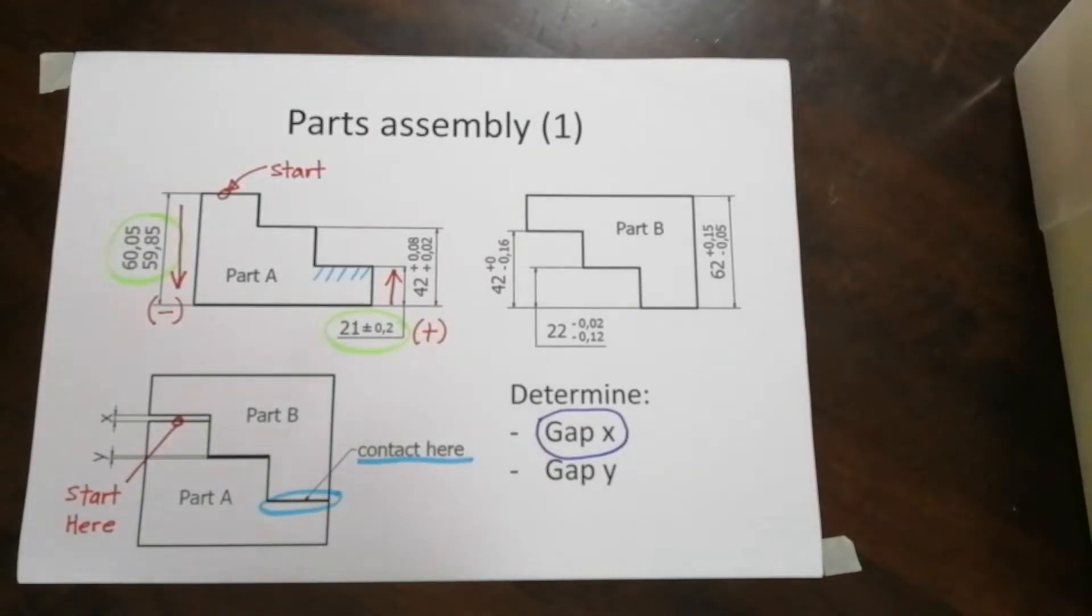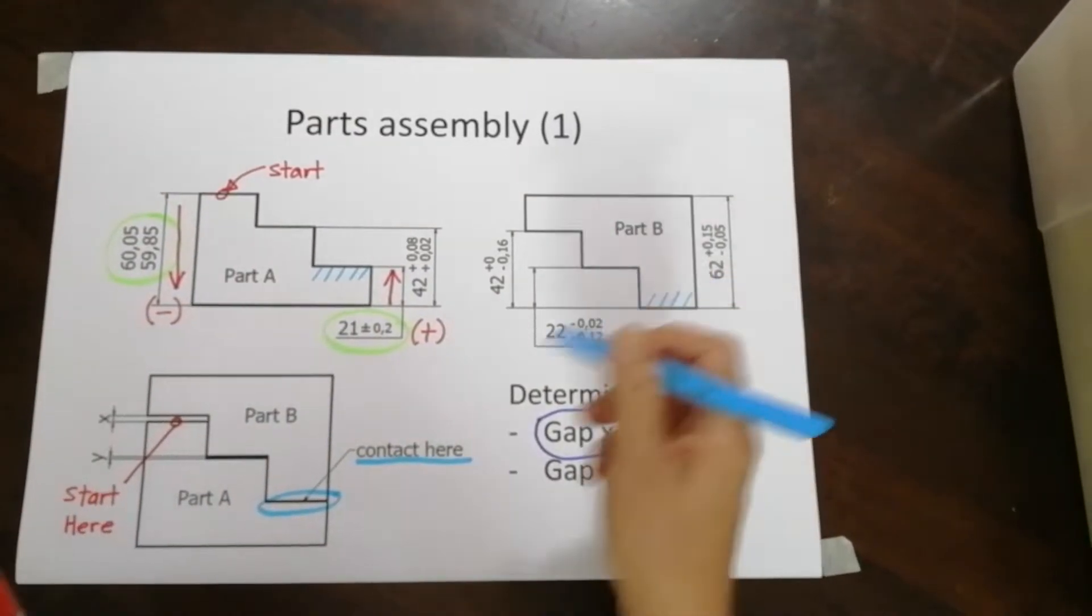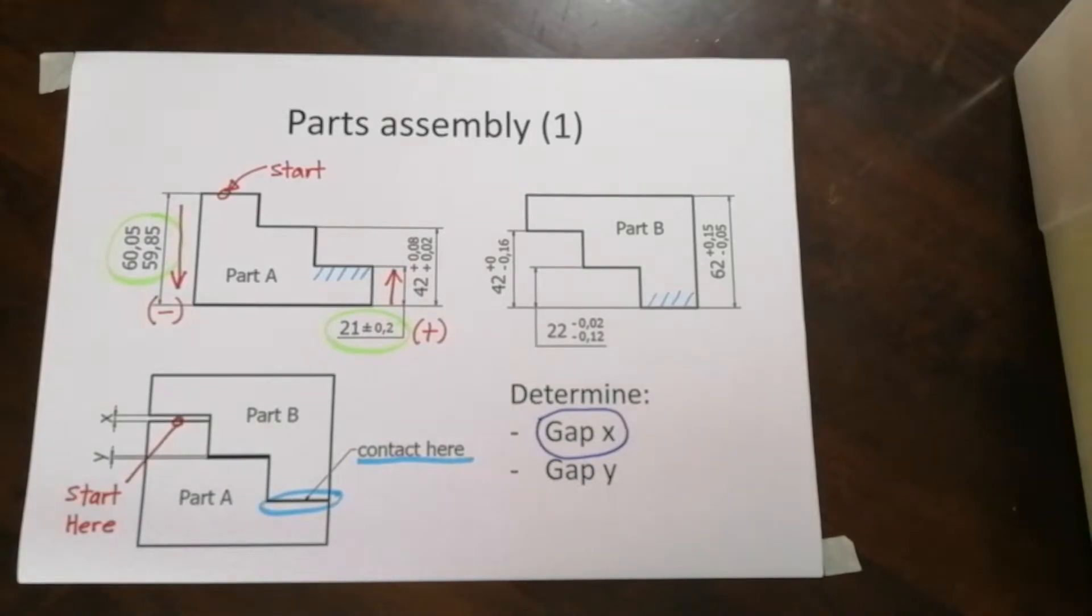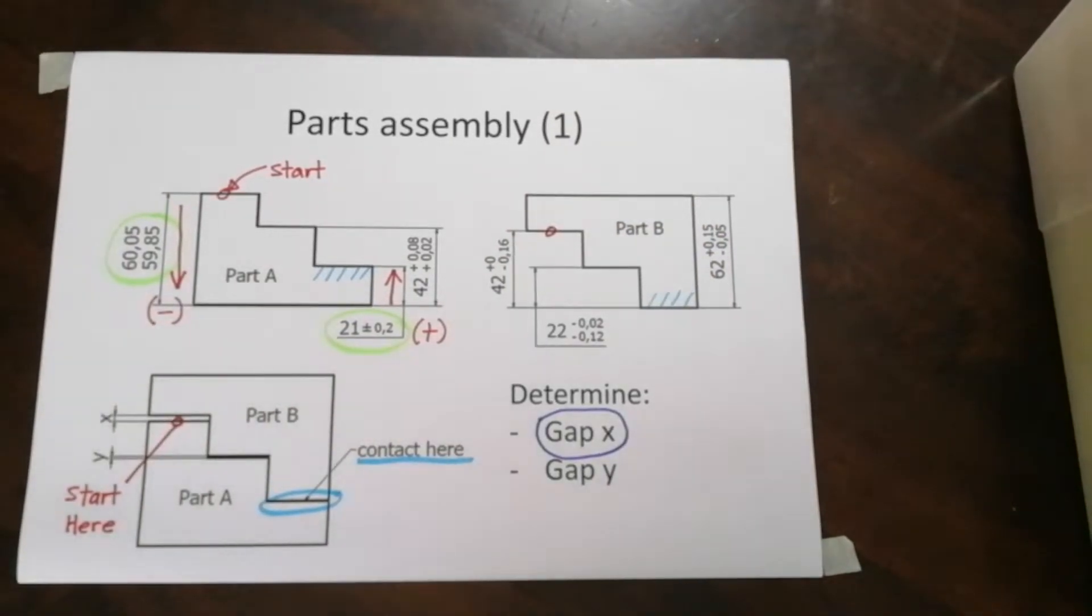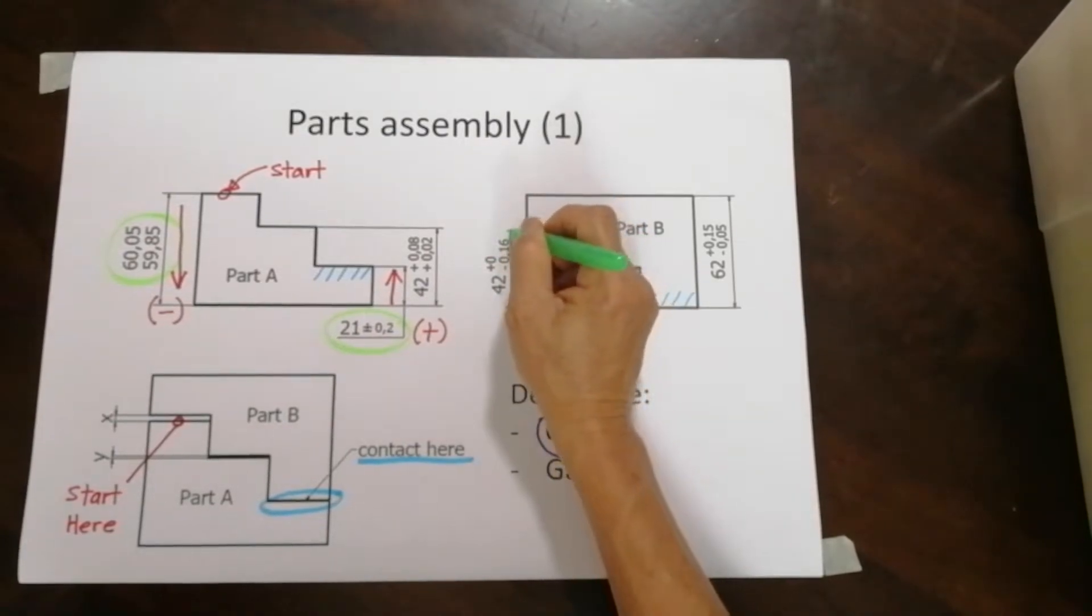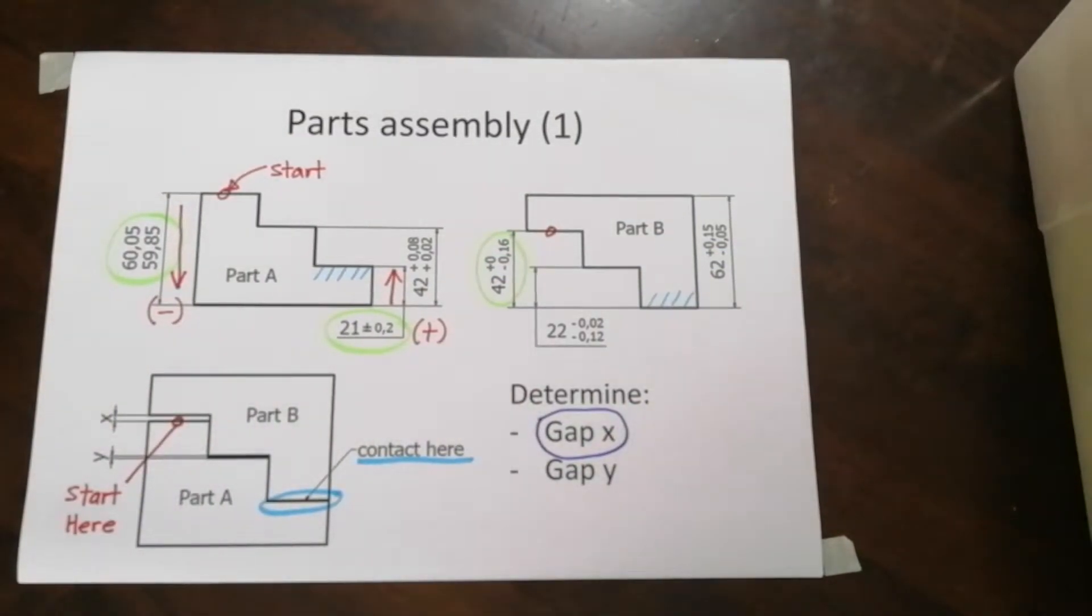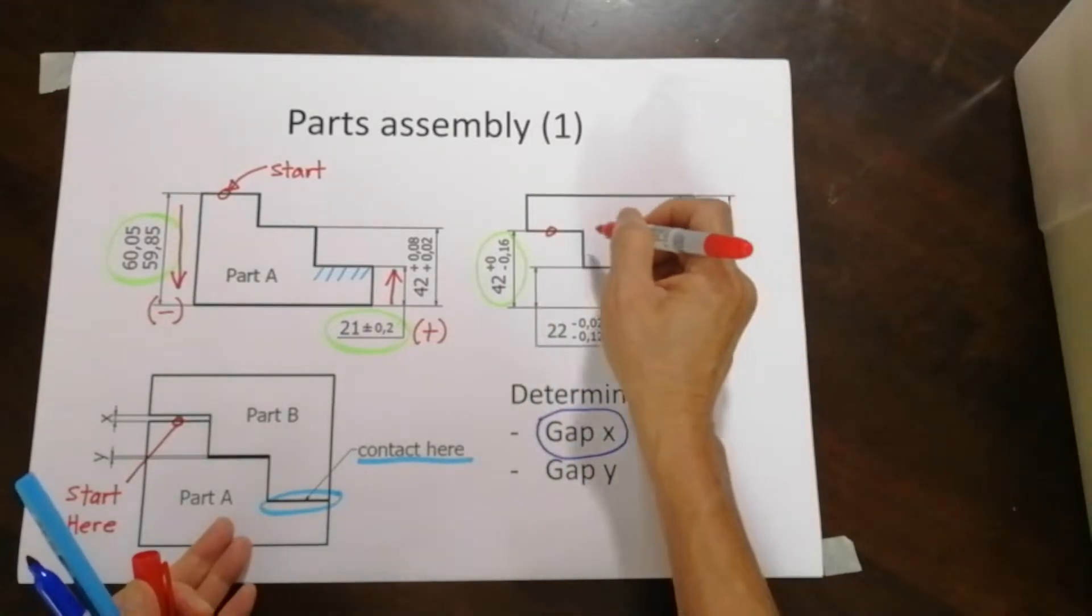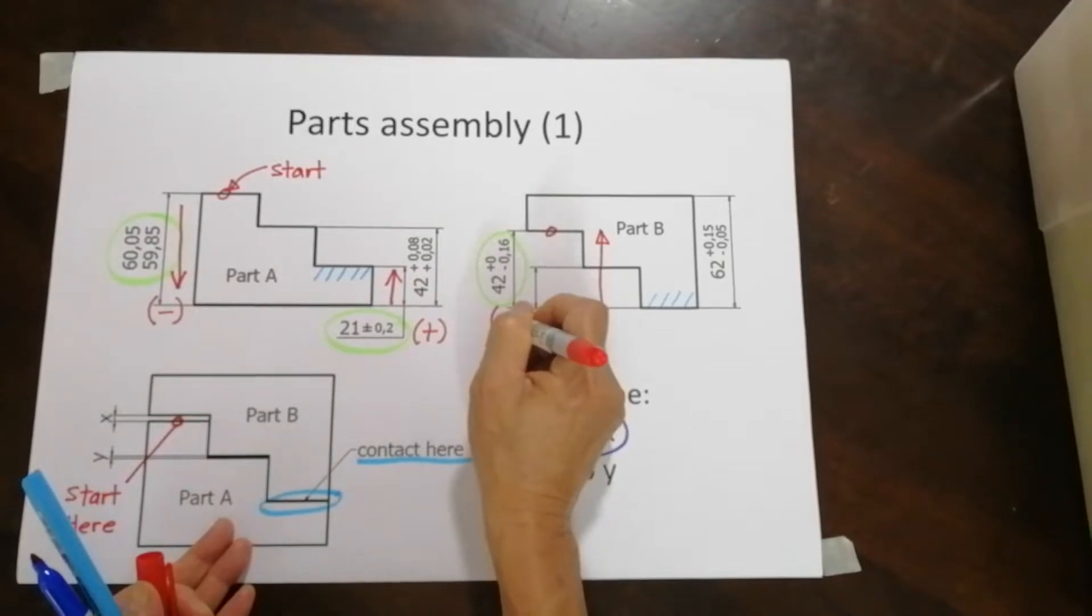Now I'm able to get to part B, because this contact point is equivalent to here. Now from part B, I need to get to the gap. The gap here, which is here. And there is only one dimension involved. The dimension is this dimension, and the direction is up, which means that this is going to be positive.